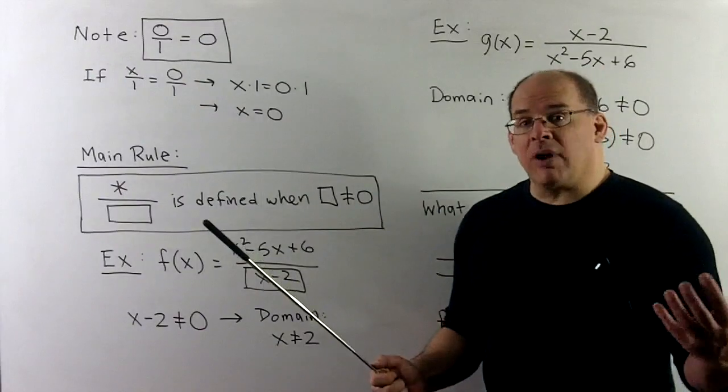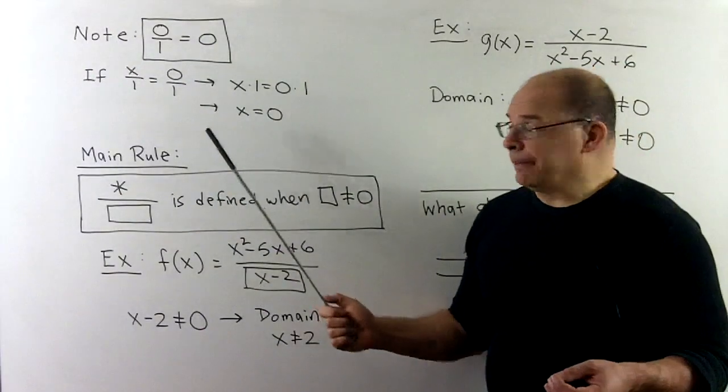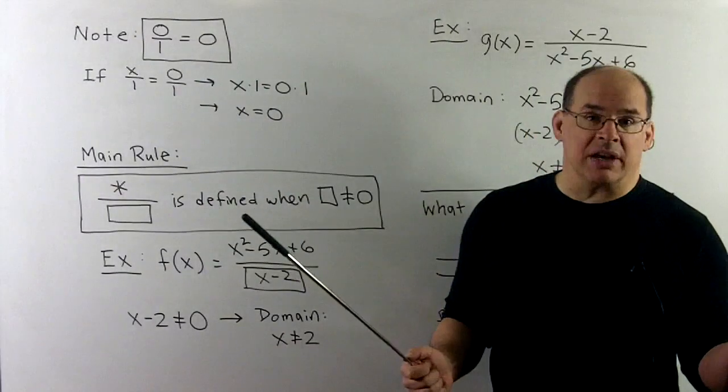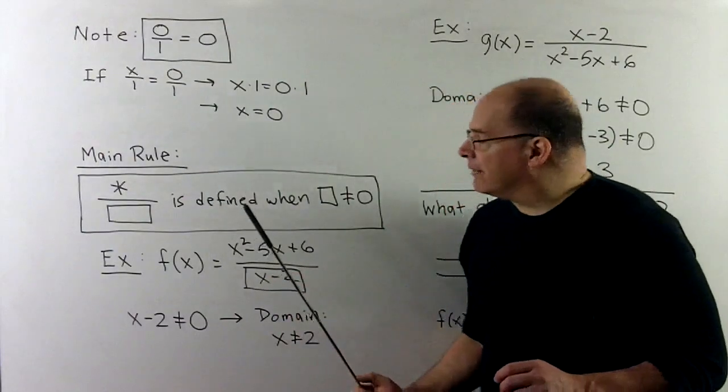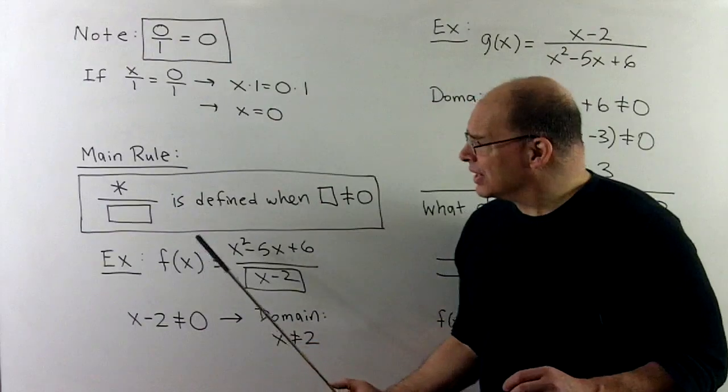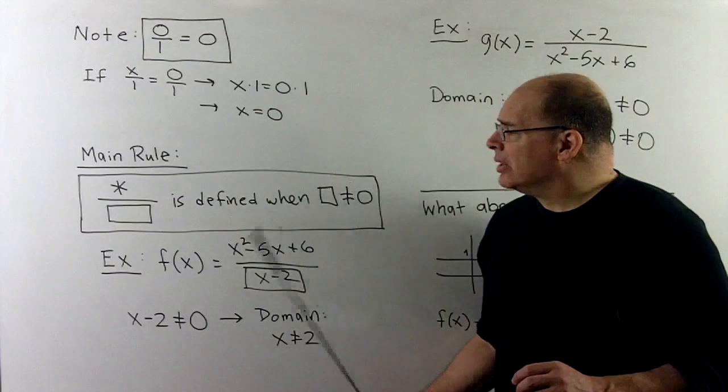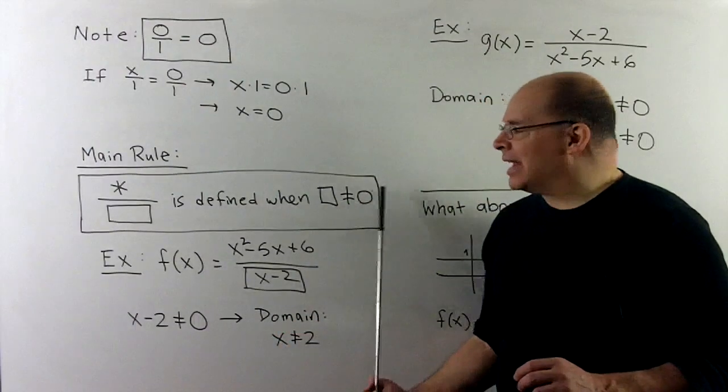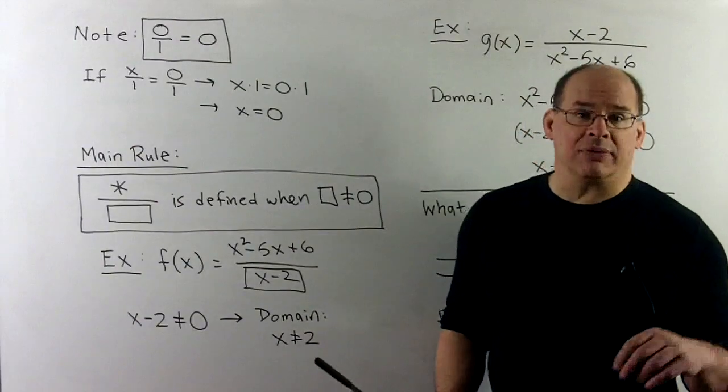Now, if I'm given a rational function, the first thing I'd want to know about it would be its domain. That would be just the set of numbers I could put in there without getting garbage. So a template for finding the domain. If I have anything over box, this will be defined when box is not equal to 0. So we just take the denominator, set it not equal to 0, and solve. Or set it equal to 0 and throw that stuff away.